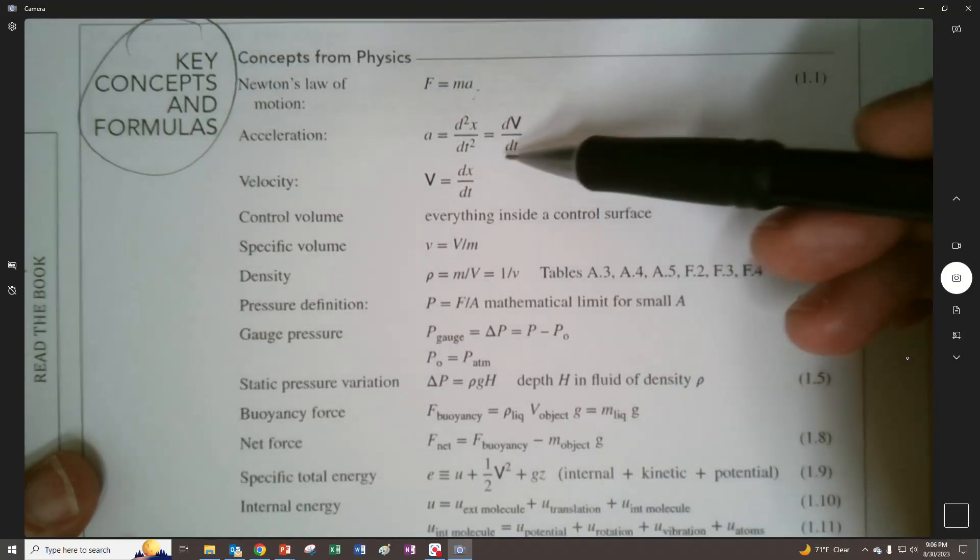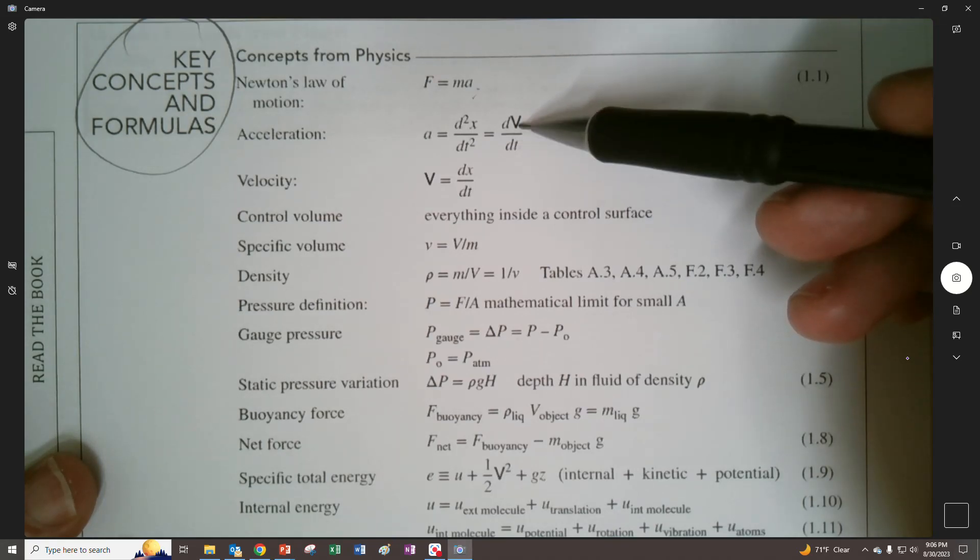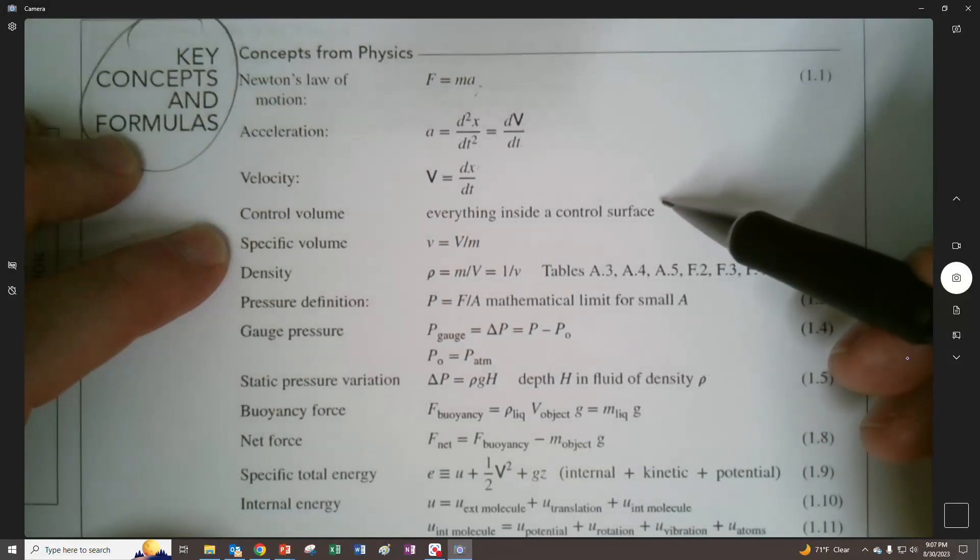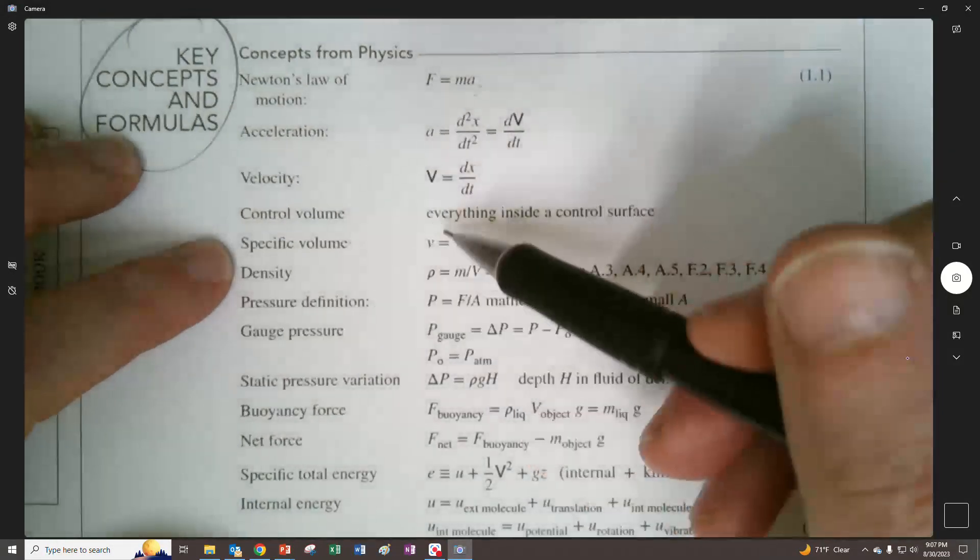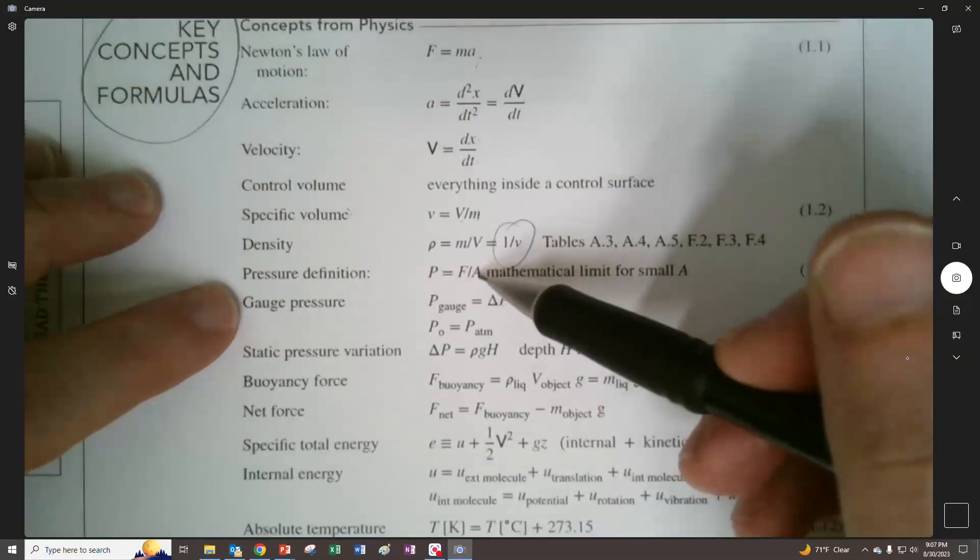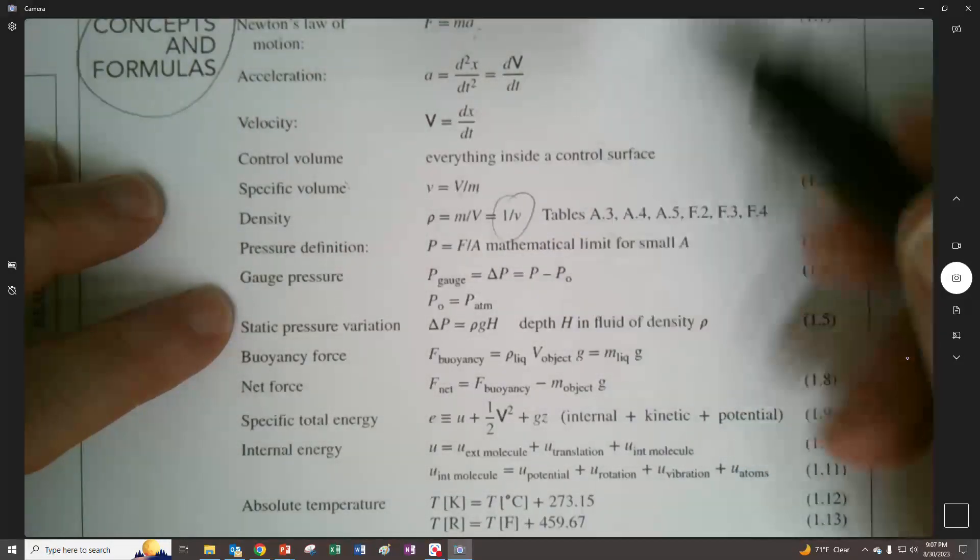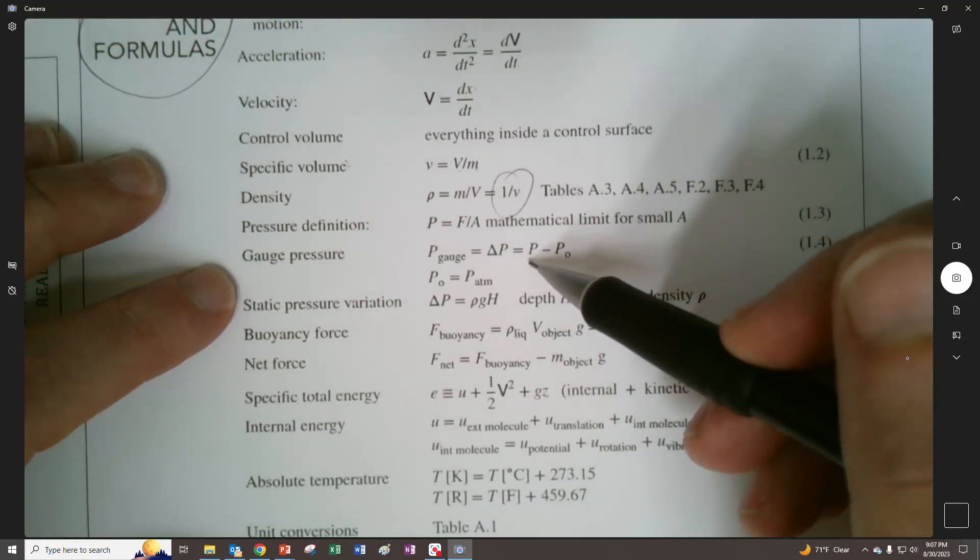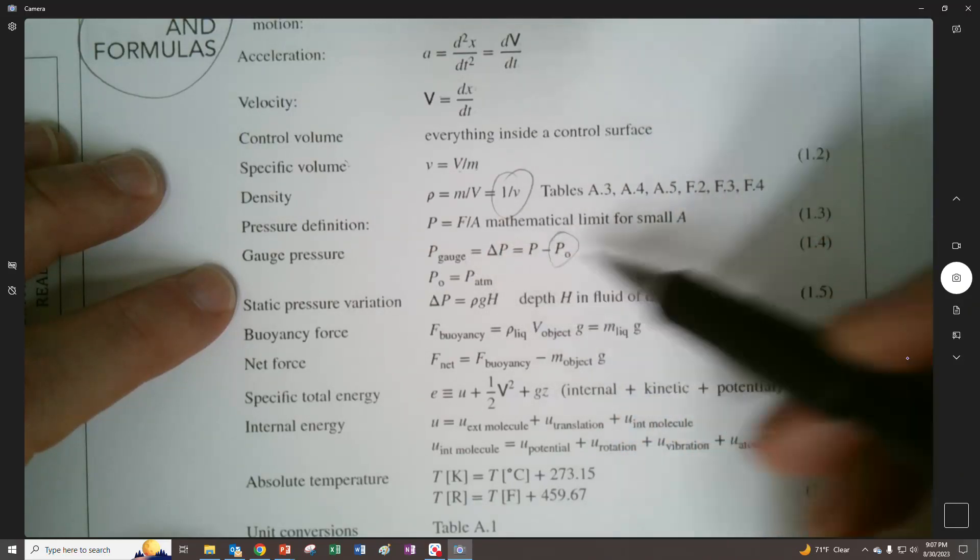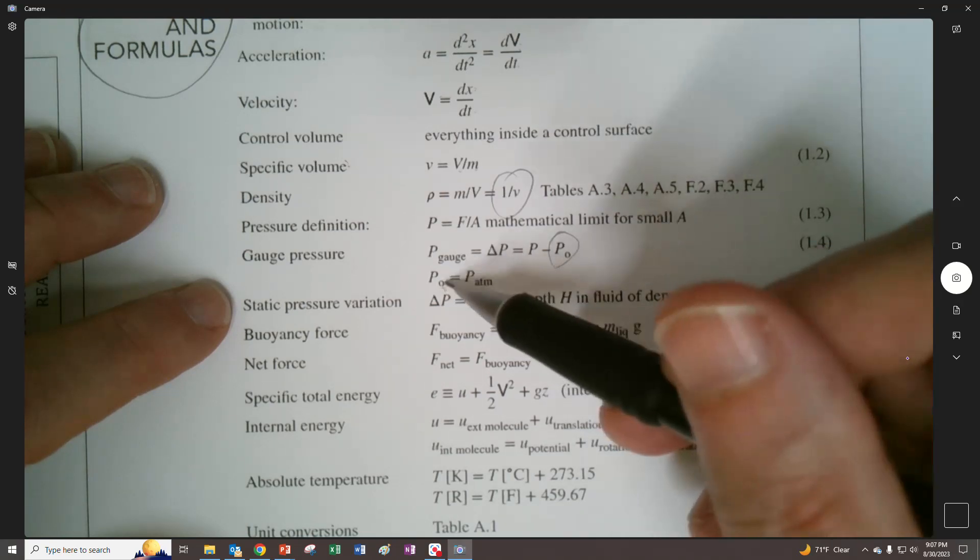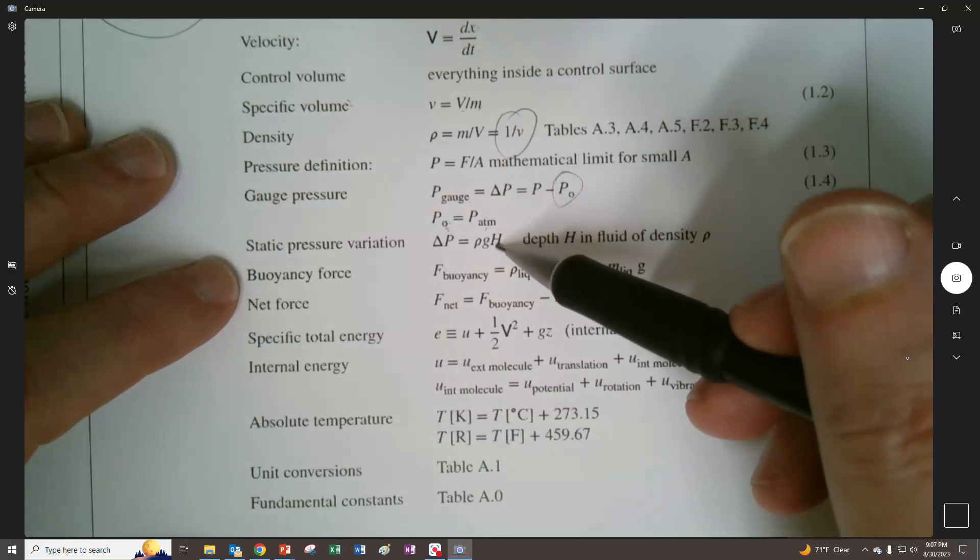F equals ma. Didn't really talk about acceleration all that much but it's the time rate change of velocity which is the time rate change of position. Good things. Dynamics. I like it. Control volume, everything inside the control surface. Specific volume was the volume divided by mass. Density is actually the inverse of specific volume. Pressure definition, force over area. Usually using kind of a small type of infinitesimal one is one way that we can mathematically figure that out. Gauge pressure is usually going to be, we're going to subtract out the atmospheric pressure. So it's actually what we see on the gauge most of the time. We don't usually have gauges that read in absolute.